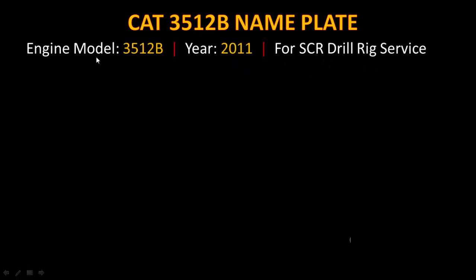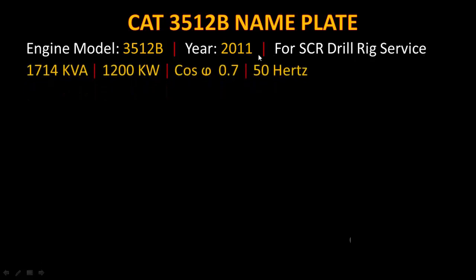Here you can see the heading: CAT 3512B nameplate. First, we look at its engine model, which is 3512B. Its manufacturing year is 2011, and this model is normally used for SCR drill rig service.